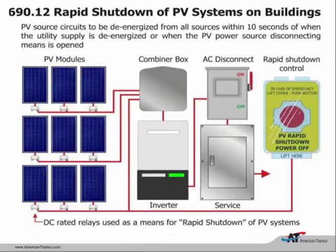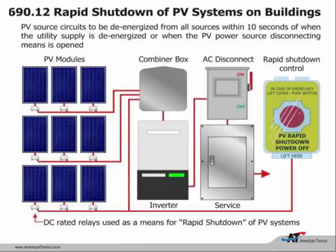Article 690 covers photovoltaic systems, which are becoming extremely prevalent. There is now a requirement to de-energize the PV system within 10 seconds in case of an emergency—this is really for firefighters. If firefighters need to de-energize a facility, a rapid shutdown button must be located near the service where they would be working. Shutting off the service does not de-energize the array system. Using DC relays, hitting that button de-energizes the relays—there will still be some power up on the roof, but the area where the firefighters are working will be safe.